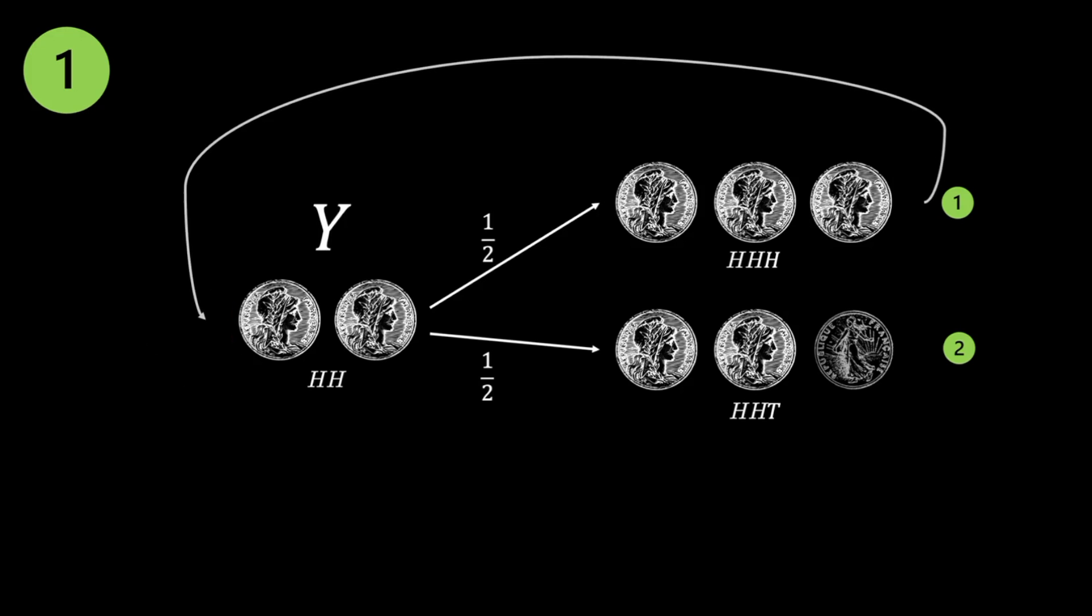One path leads to A winning, the other loops back to double hits, both paths occurring with equal probability. Hence the recurrence relation for Y. Y is equal to 1. This means A is guaranteed to win starting from the sequence of double hits.